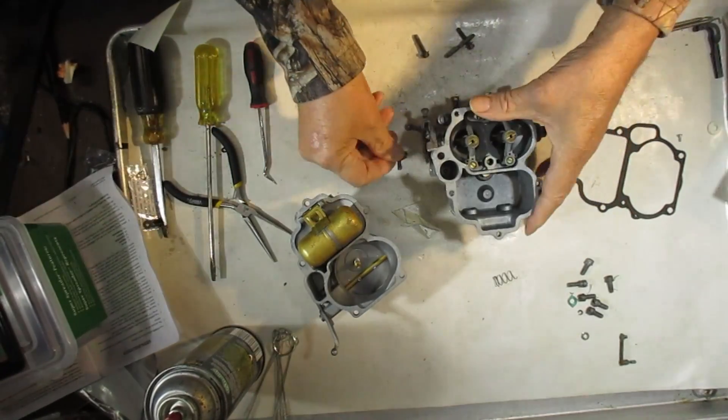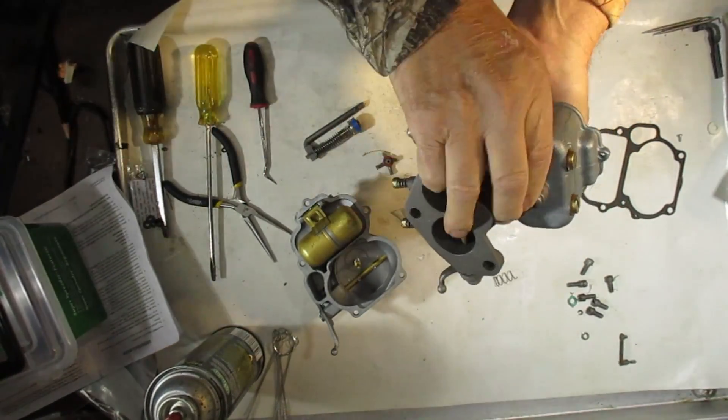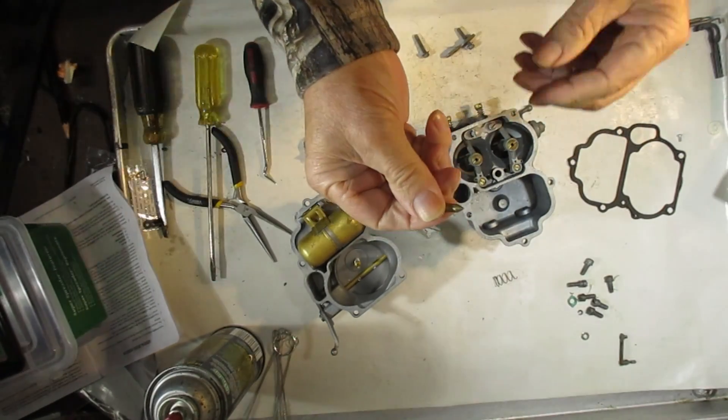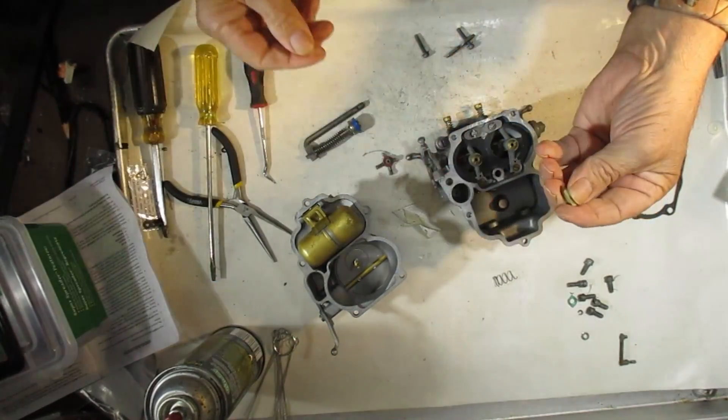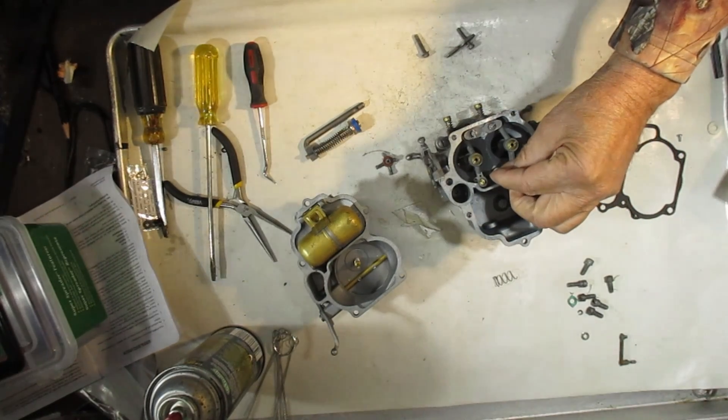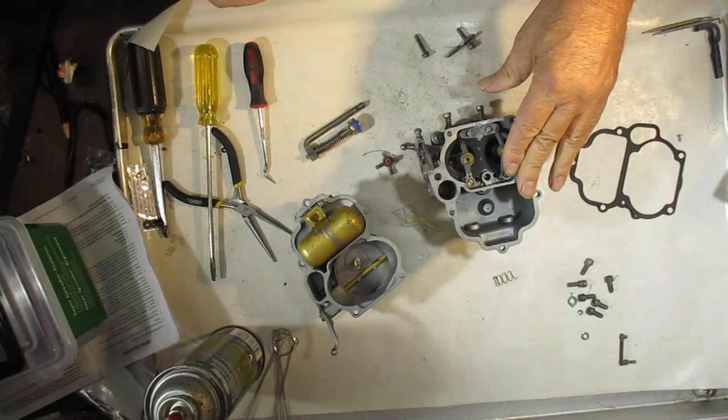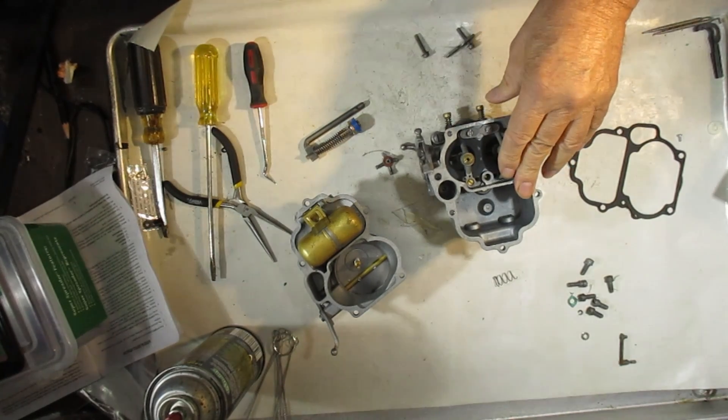Also, this particular one has a gasket, and then at the bottom of the main discharge here is a check weight with a point in it.